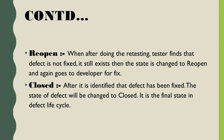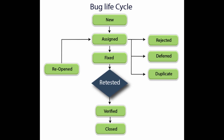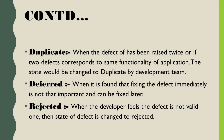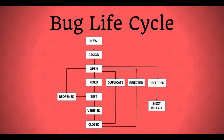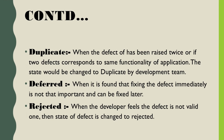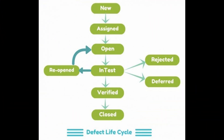There are also some other states in the defect life cycle. In the duplicate state, the state of defect will be changed to duplicate if the defect has been raised twice or if the defect corresponds to the same functionality of the application — this is changed by the development team. In the deferred state, the defect is not important to fix immediately and can be fixed later, or if the defect has no impact on the current release and will get fixed in the next release. In the rejected state, when the developer feels the defect is not a valid one, the state of defect is changed to rejected.